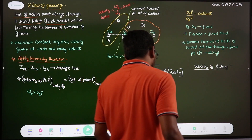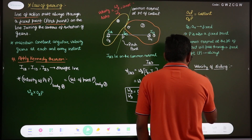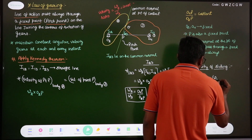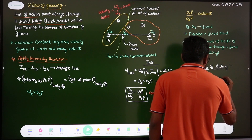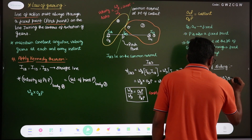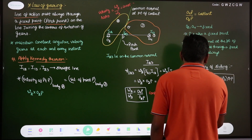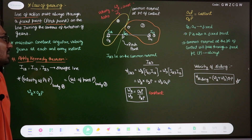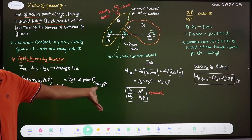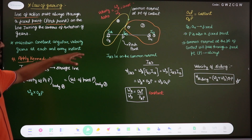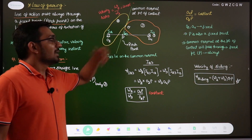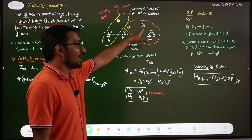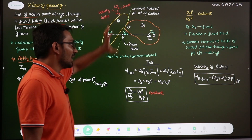The velocity of sliding at a point of contact equals the sum of angular velocities — omega2 plus omega3 — multiplied by the distance between the point of contact Q and the pitch point P. When the point of contact is at the pitch point, this distance is zero, so the velocity of sliding is zero.